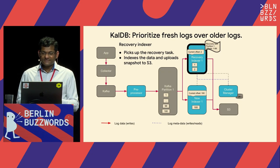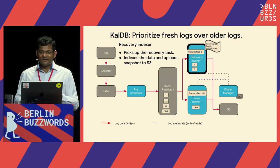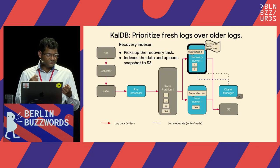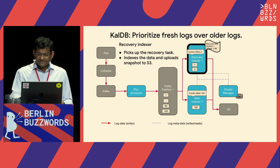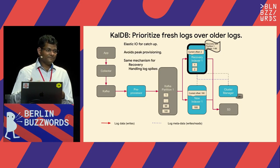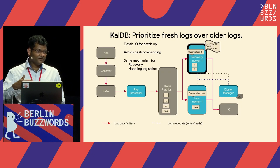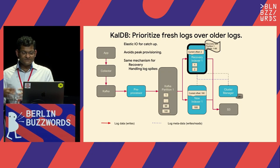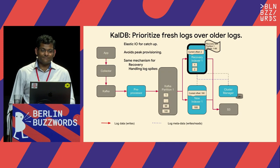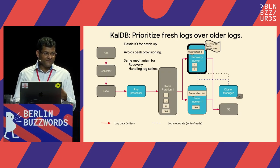For every recovery task, CalDB spins up a recovery indexer. The recovery indexer picks up the task — in this case, indexing offsets 1 through 99 — gets those messages, indexes them, uploads the data to S3, and then terminates. This is how CalDB uses recovery indexers to add elastic capacity as needed to catch up, avoiding peak provisioning. We use the same mechanism for recovering from failures and for handling log spikes.